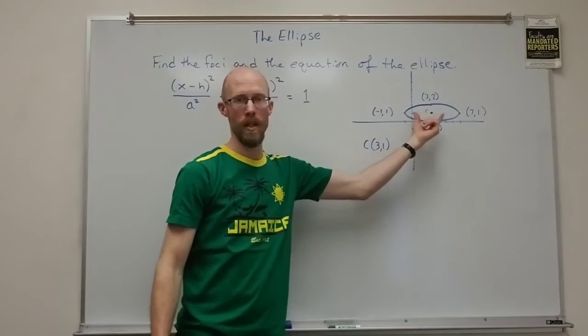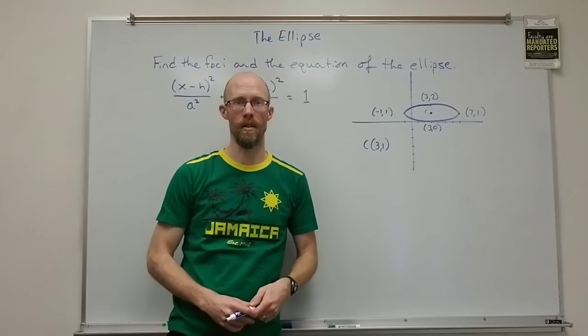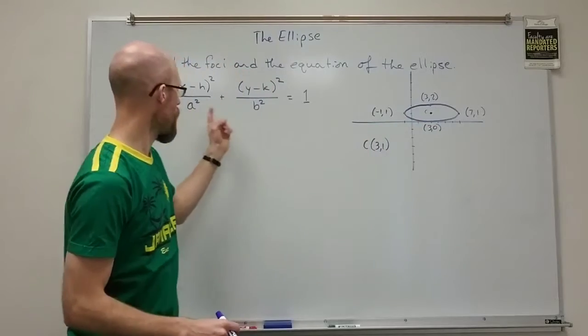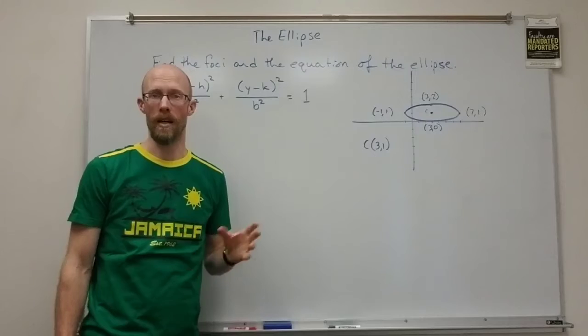And we know that it's a underneath the x and b underneath the y because this is oriented in the horizontal direction. The major axis is horizontal which means that that a value is bigger which goes under the x squared term.